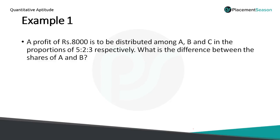Example 1. A profit of Rs.8000 is to be distributed among A, B and C in the proportions of 5:2:3 respectively.